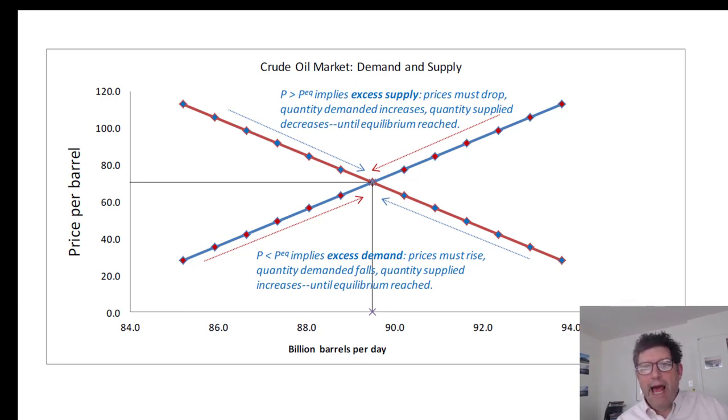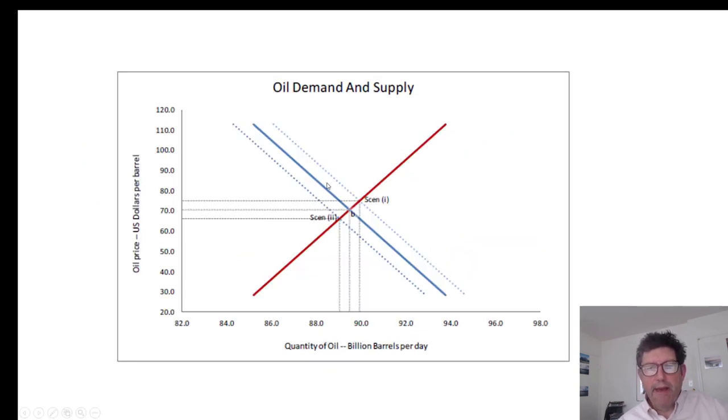But now what we want to talk about is how prices and quantities can move over time and how those prices and quantities are related to shifts in demand and shifts in supply, or more precisely shifts in the demand curve and shifts in the supply curve. So let's first talk about shifts in the demand curve. This blue demand curve here, the solid blue, this is our initial demand curve.